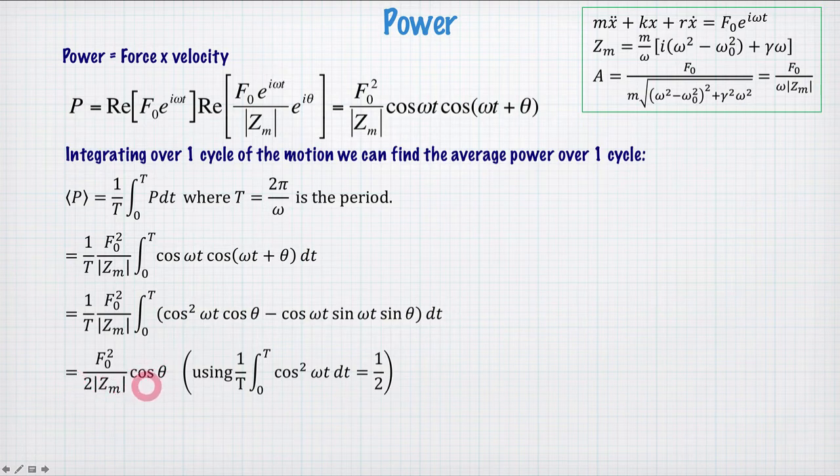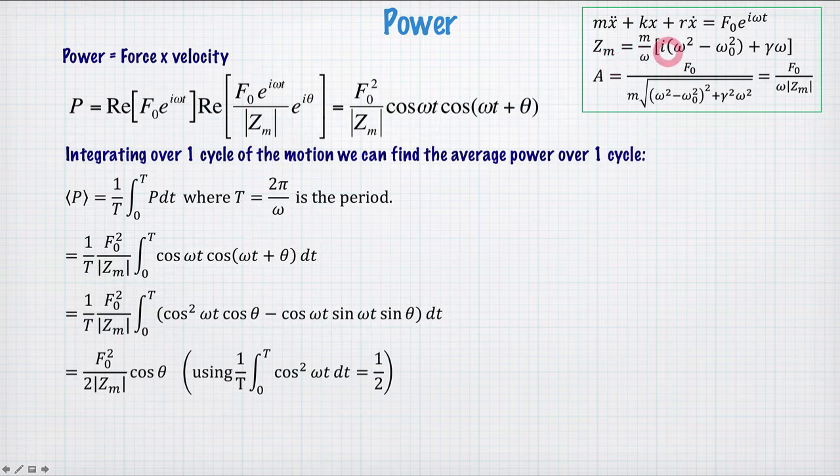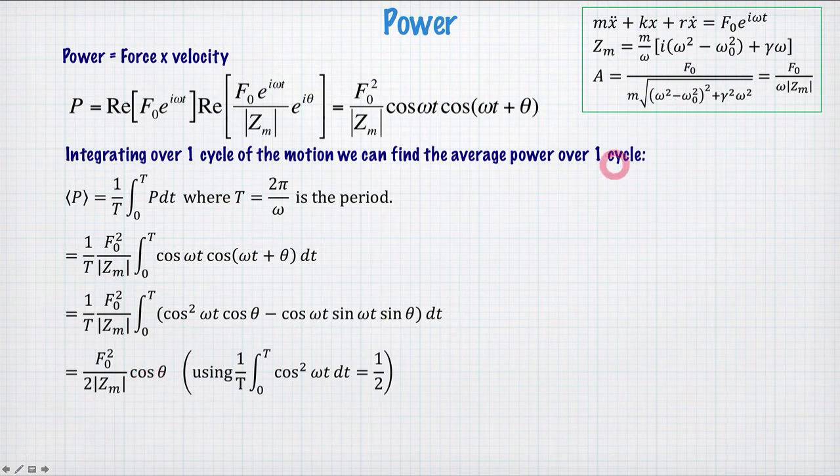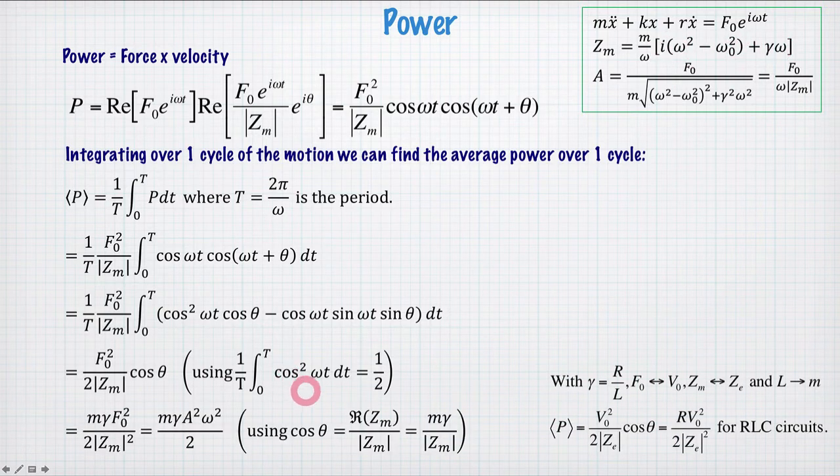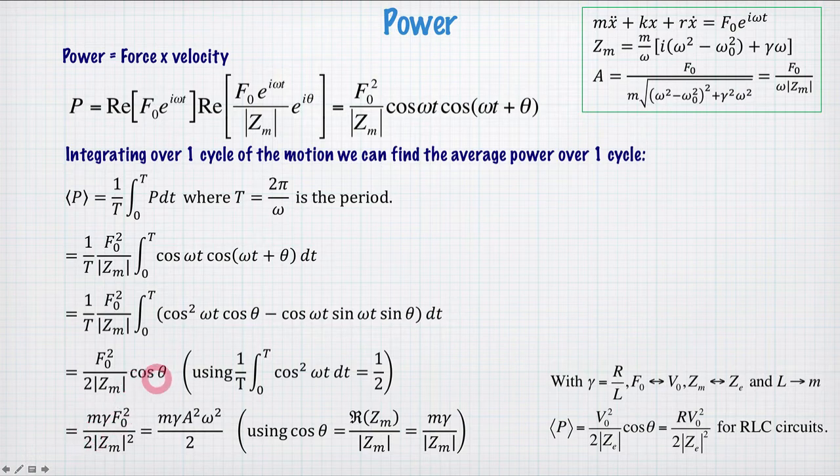Now I can simplify a little further by getting rid of the cos(θ), because θ is the argument of this complex number here, mechanical impedance, or the negative argument, but we take the cosine, we don't care whether it's positive or negative. So we just want to find the argument of this complex number, so it's the real part divided by the absolute value. So I substitute in that here, and we find we can get rid of this cos(θ).